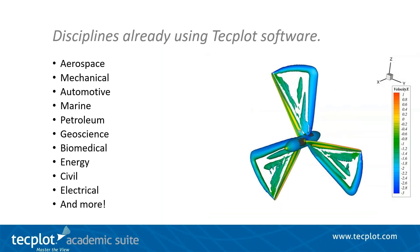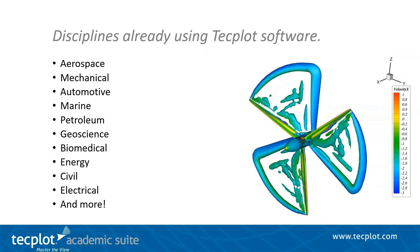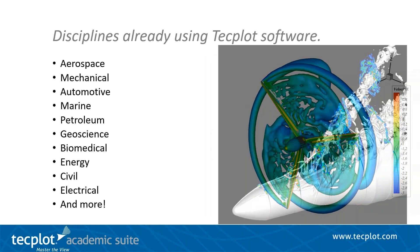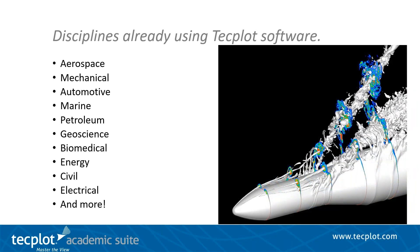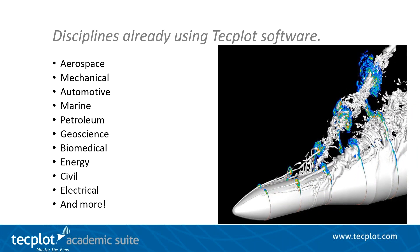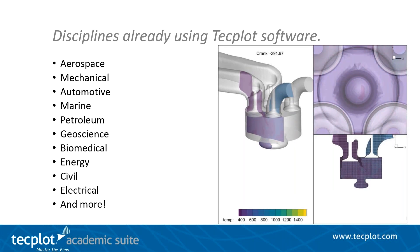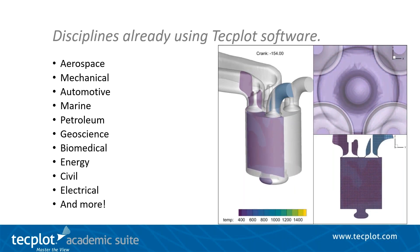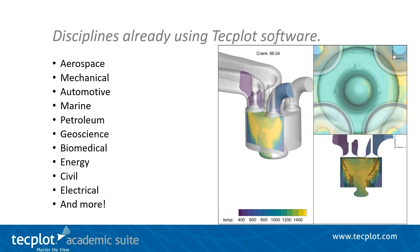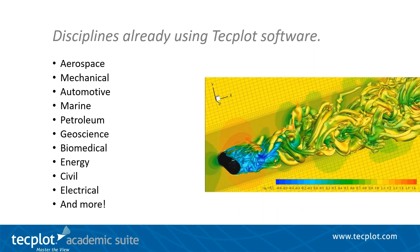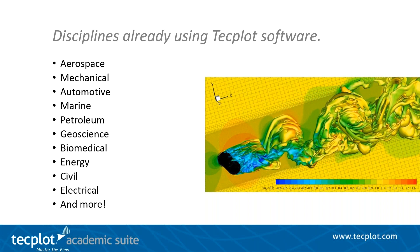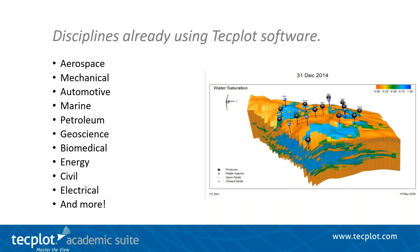What disciplines are already using one of these tools in the TechPlot Academic Suite? Virtually any STEM discipline can find a useful application, whether it's in the School of Engineering, Sciences, or even Medicine. A large percentage of our users are in aerospace or mechanical engineering, including aerodynamics and aerospace, but also the automotive industry. Aerospace uses our tools for aircraft design and launch design, automotive for aerodynamic design, as well as internal combustion simulation and battery thermal propagation simulation. Marine engineering uses them for hydrodynamic simulation, and petroleum engineering for reservoir simulation data.